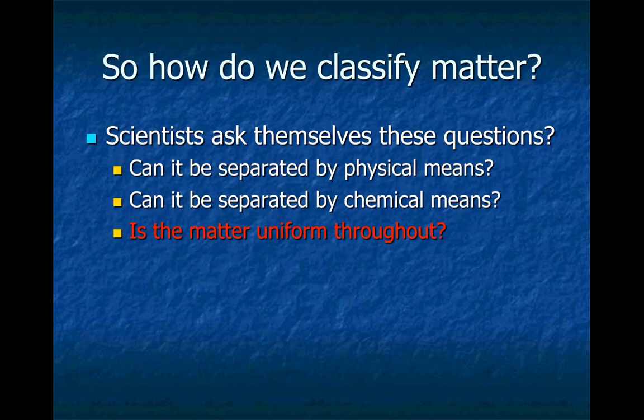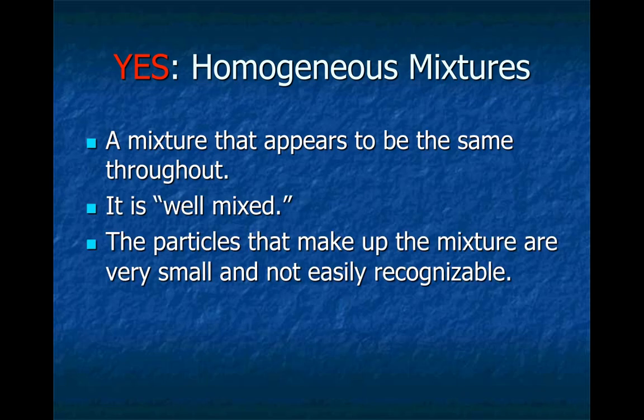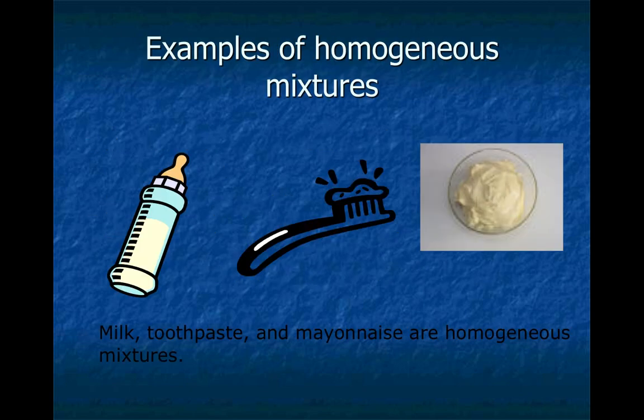So now let's talk about the different types of mixtures that we get. We look at our last question, is the matter uniform throughout? When we can answer yes to this question, we get what's called a homogenous mixture. If you look at the root word for homogenous, you see that it means the same. So homogenous mixtures are mixtures that appear to be the same throughout. They're well mixed. The particles that make up the mixture are very small and not easily recognizable. Go ahead and add this to your foldable. Here are some great examples of homogenous mixtures: milk, toothpaste, mayonnaise, water, and air.